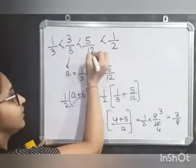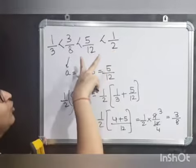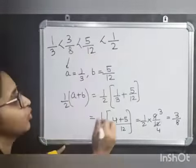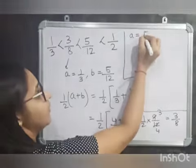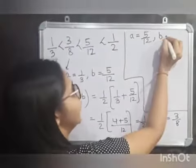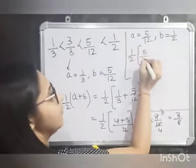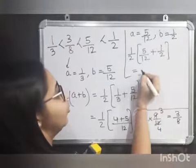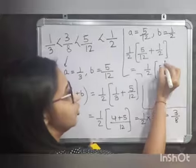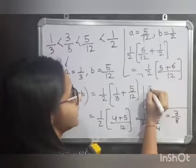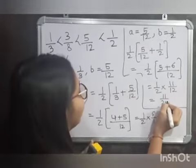Now to find another rational number, you can find one between 5 by 12 and 1 by 2. Let A equal to 5 by 12 and B equal to 1 by 2. So 1 by 2 times (5 by 12 plus 1 by 2). LCM is 12. That gives 1 by 2 times 11 by 12, which equals 11 by 24.